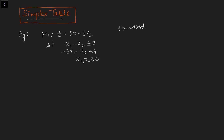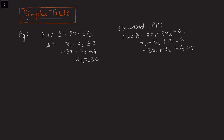The first prerequisite to write the simplex table is to write the LPP into standard form. In the standard LPP, constraints are equalities, so we add slack variables: x1 minus x2 plus s1 equals 2, minus 3x1 plus x2 plus s2 equals 4. Since the slack variables are involved, their cost in the objective function is 0 — that is, 0 times s1 and 0 times s2. All decision variables including slack variables are greater than or equal to 0.